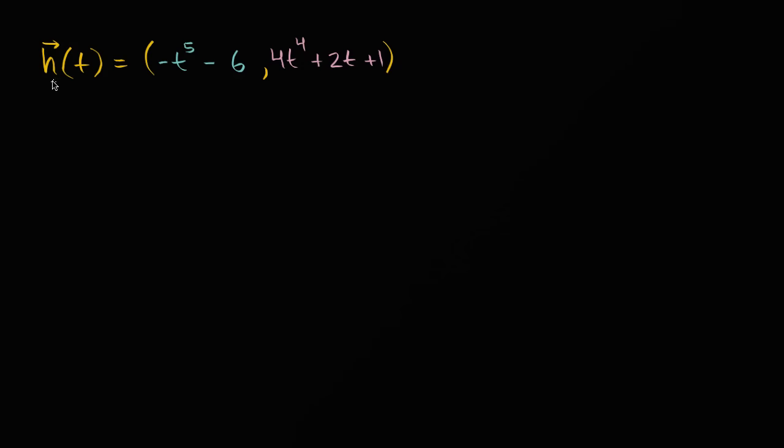So I have a vector-valued function h here. When I say vector-valued, it means you give me a t, it's a function of t, and so you give me a t, I'm not just gonna give you a number, I'm gonna give you a vector. And as we'll see, you're gonna get a two-dimensional vector. You could view this as the x component of the vector and the y component of the vector. And you are probably familiar by now that there's multiple notations for even a two-dimensional vector.